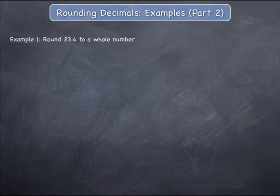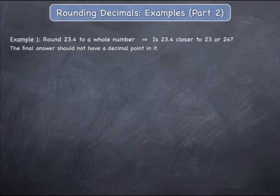Example 1: Round 23.4 to a whole number. 23.4 is in between 23 and 24, and you are really being asked whether 23.4 is more closely approximated by 23 or by 24.